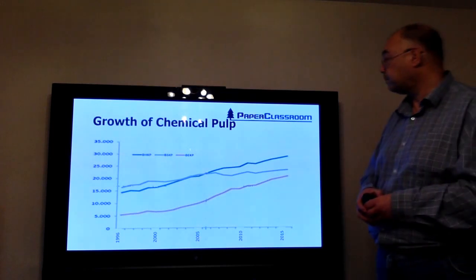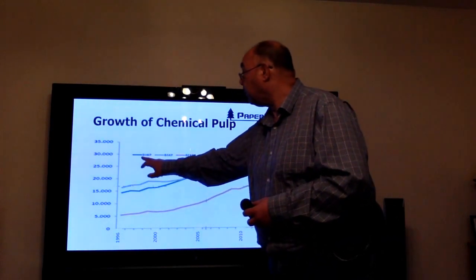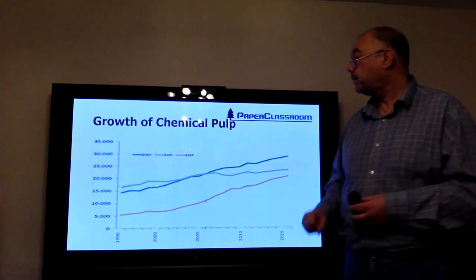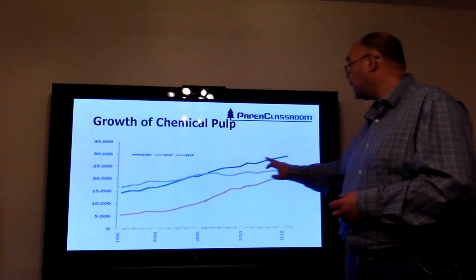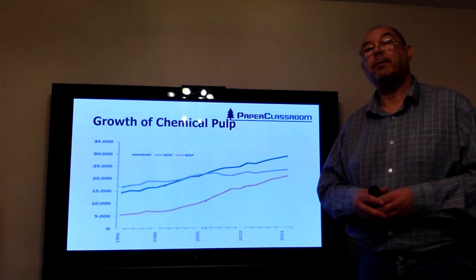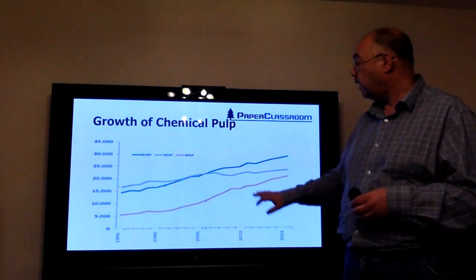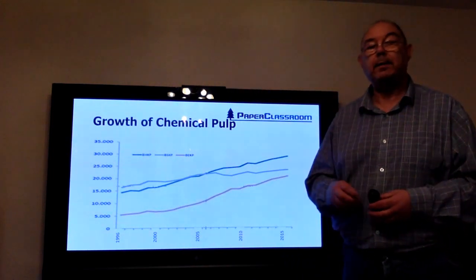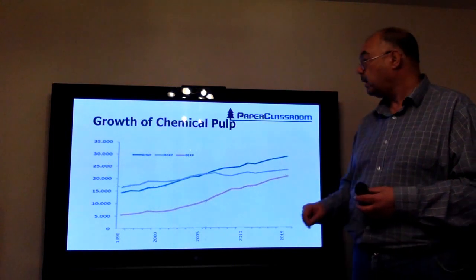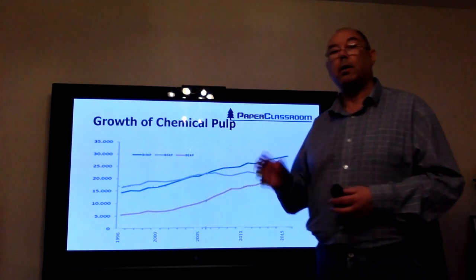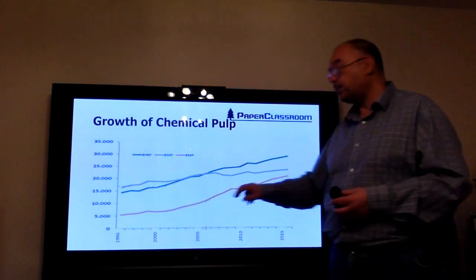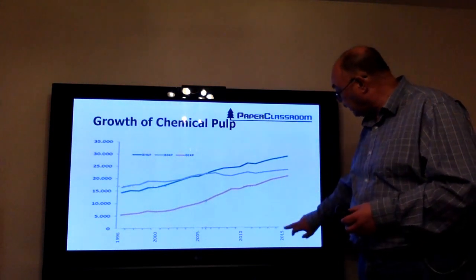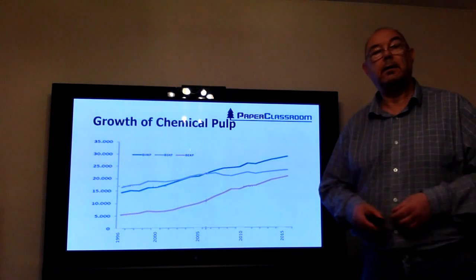The green line here, BHKP—bleached hardwood kraft pulp—is showing a nice steady increase. Hardwoods, of course, the main use of hardwoods is providing good formation for paper. And really interesting is this yellow one down here, the orange one—BEKP, this is bleached eucalyptus kraft pulp. So whereas the green line represents all hardwoods, this line here represents just one hardwood, and that is the eucalyptus. So as you can see, eucalyptus is by far the most preferred hardwood.